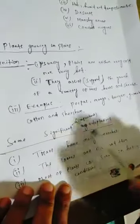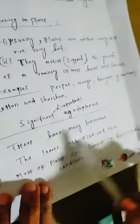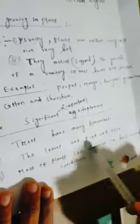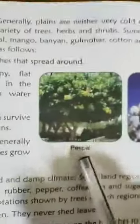Some significant adaptations in plains plants: first, trees have many branches; second, the leaves are flat and thin; third, most of the plants can survive in hot weather conditions. Referring to the textbook, examples include the peepal tree and cotton tree — leaves are flat and thin, and plants survive in hot weather conditions.